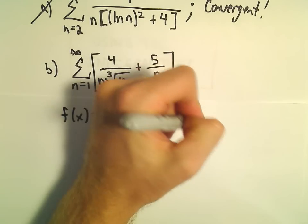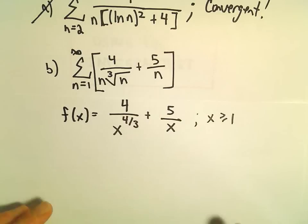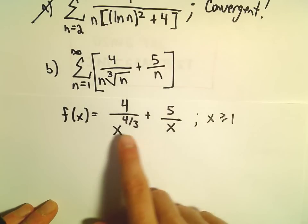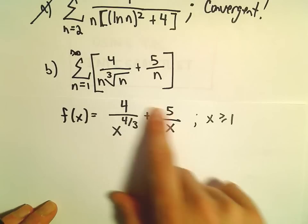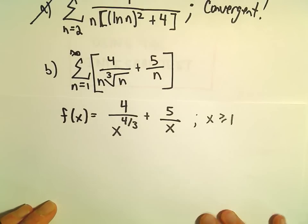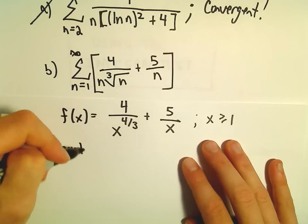Well, for x values greater than or equal to 1, the denominators are continuous, so this will be a continuous function when we add them together. So it's definitely continuous, no problem there.